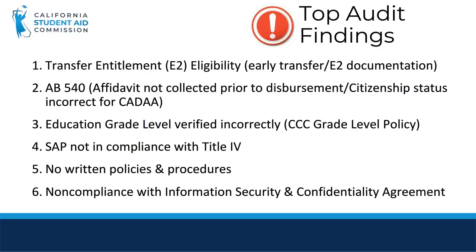Here are the most common audit findings. The transfer entitlement finding has to do with eligibility. Schools must ensure, prior to disbursing funds, that students who submit the G-6 transfer entitlement certification actually meet eligibility requirements. In addition, 10% of new and renewal E-2 awards are randomly flagged for verification. Requirements include: graduated or equivalent from a California high school, a California resident at time of high school graduation or on their 18th birthday, under age 28 at the time of transfer, a direct transfer from a community college to a BDGI, sufficient financial need, and a 2.4 community college GPA.